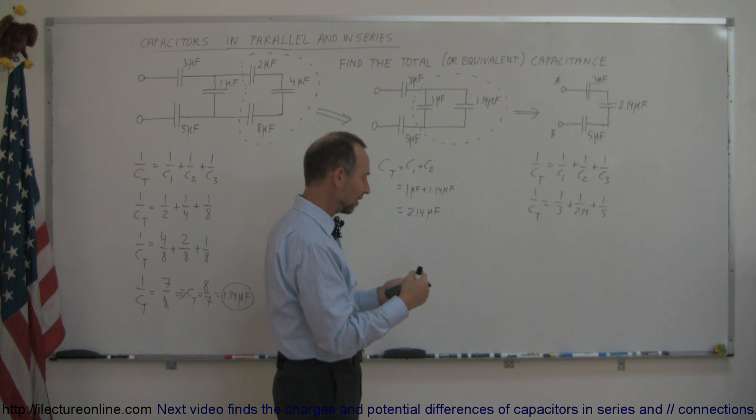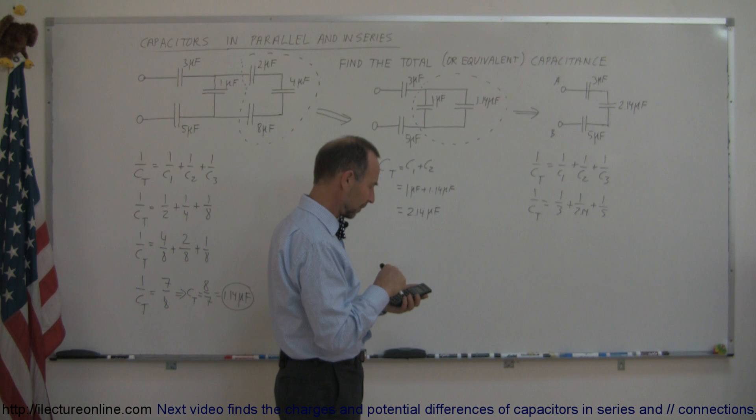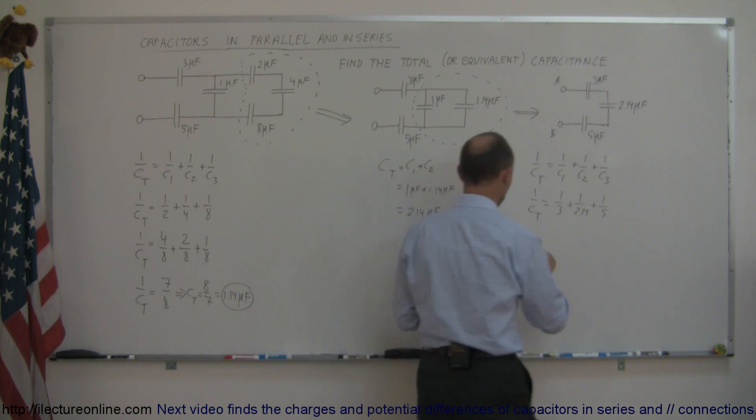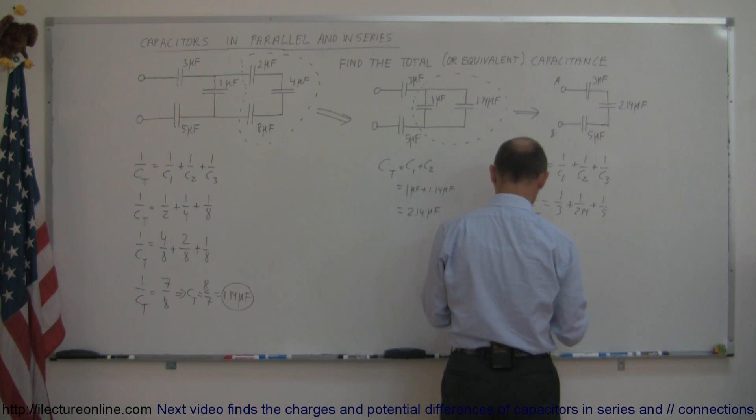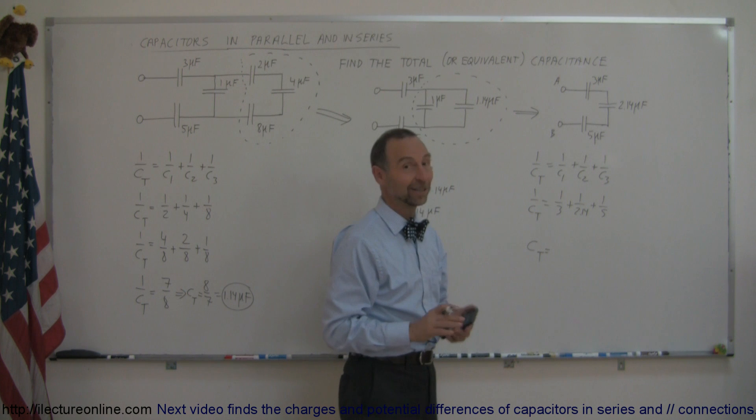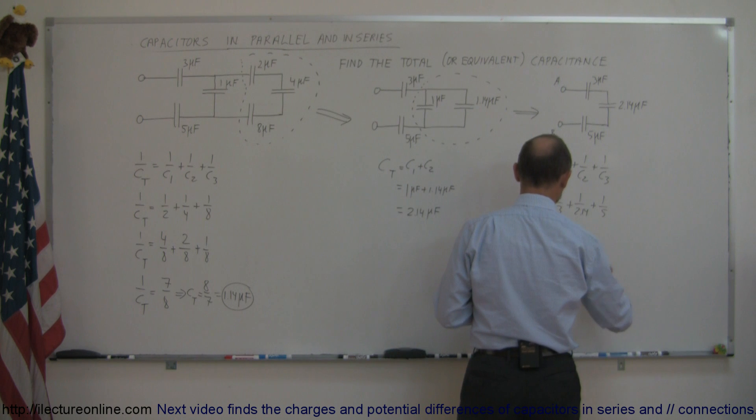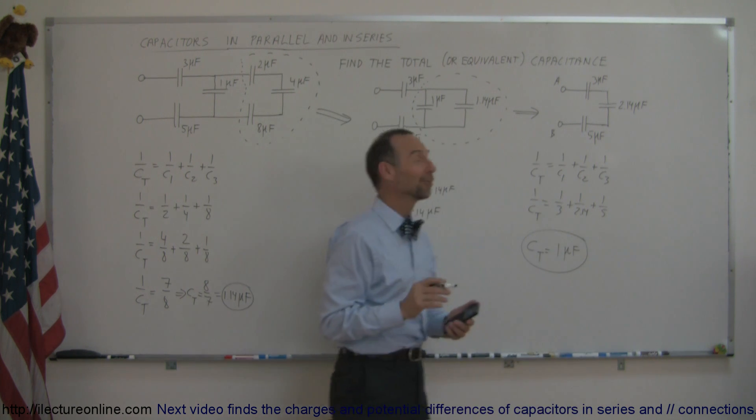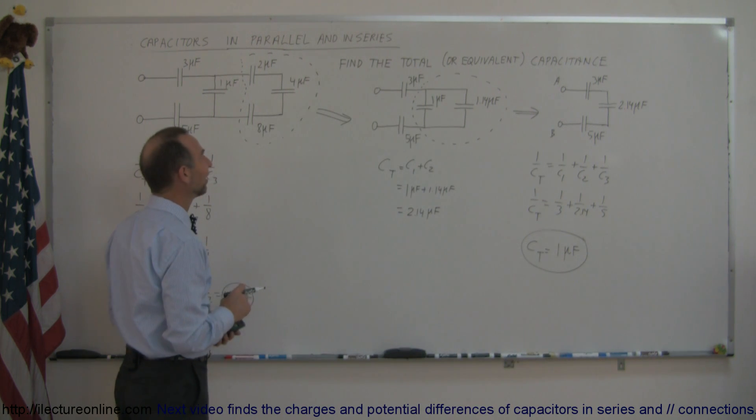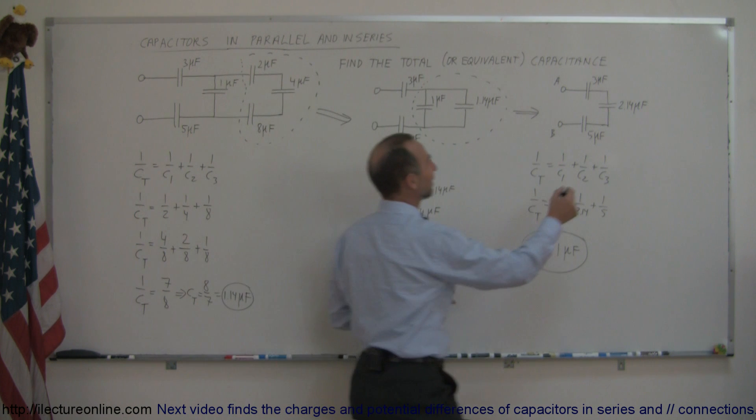We have one divided by three plus one divided by 2.14 plus one divided by five. That's one over C total. To get C total we take the inverse of that, and the inverse is - I must have picked my numbers just right, this is purely by accident - it equals one microfarad capacitor.